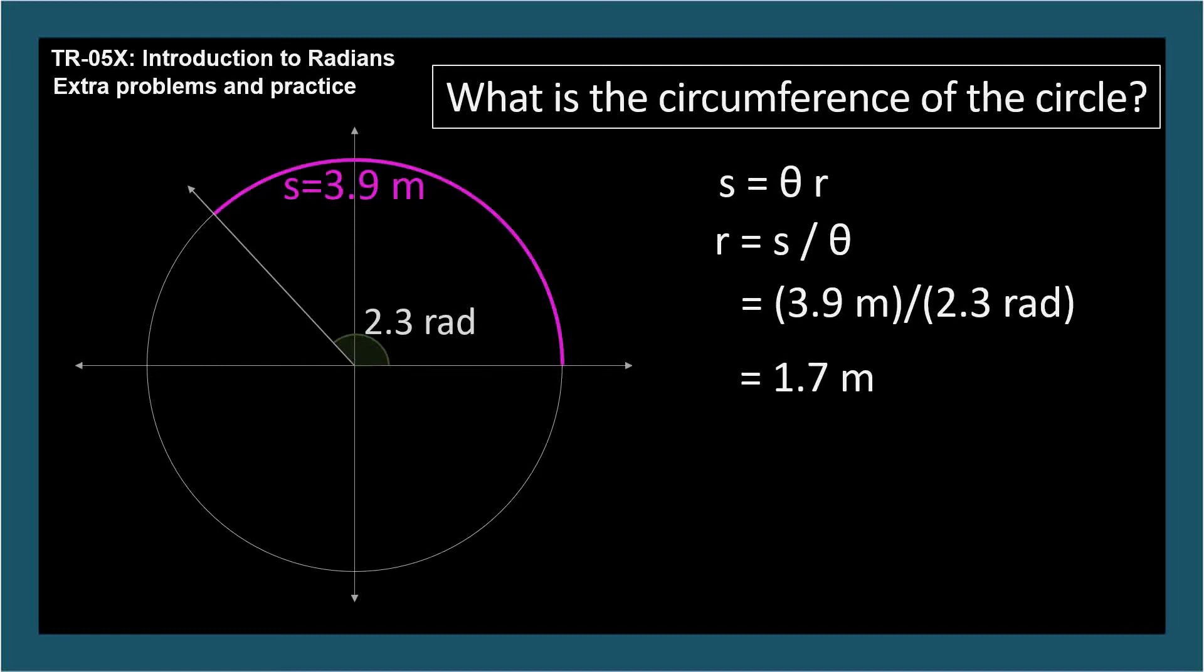Remember, we were asked for the circumference, not the radius. So we can't stop here. A circle's circumference is 2 pi times its radius. So we multiply 1.7 meters times 2 pi to get 10.7 meters. And that's our answer.